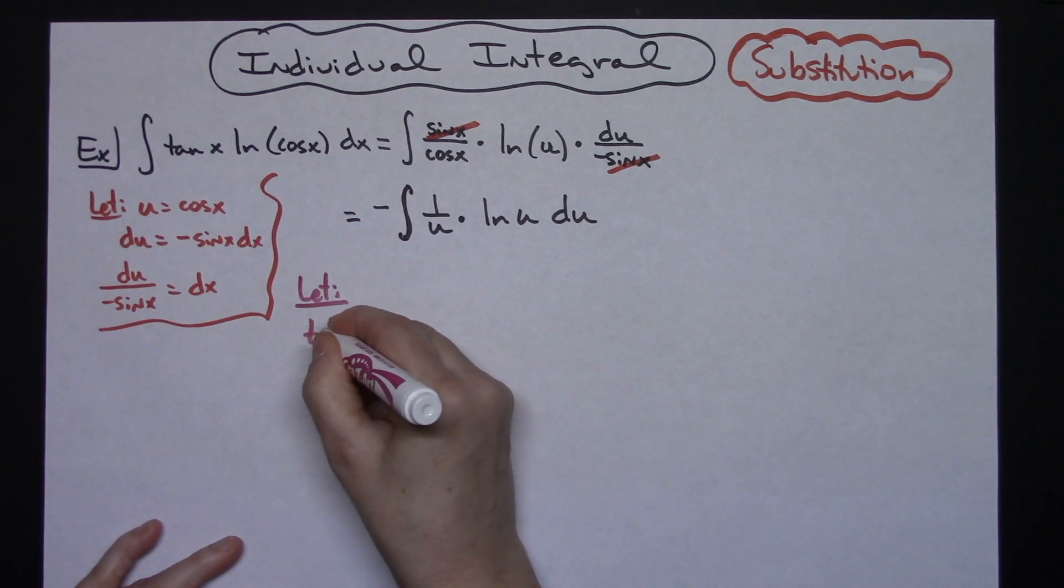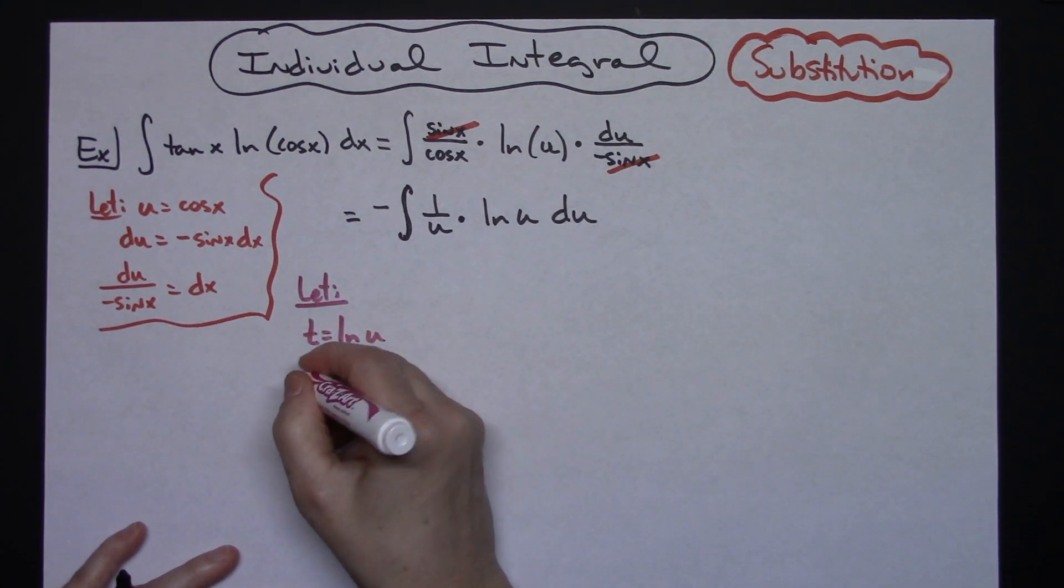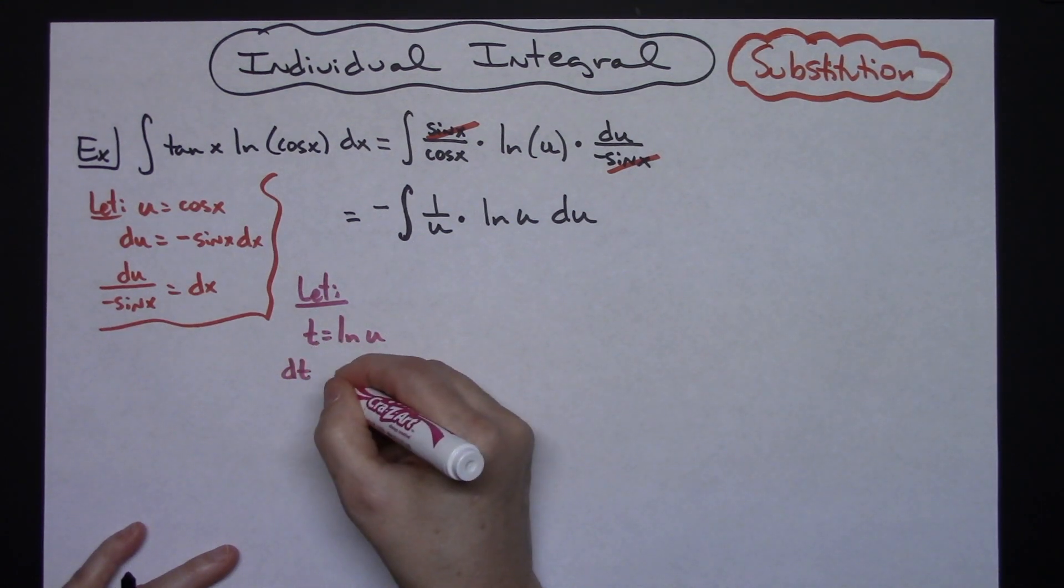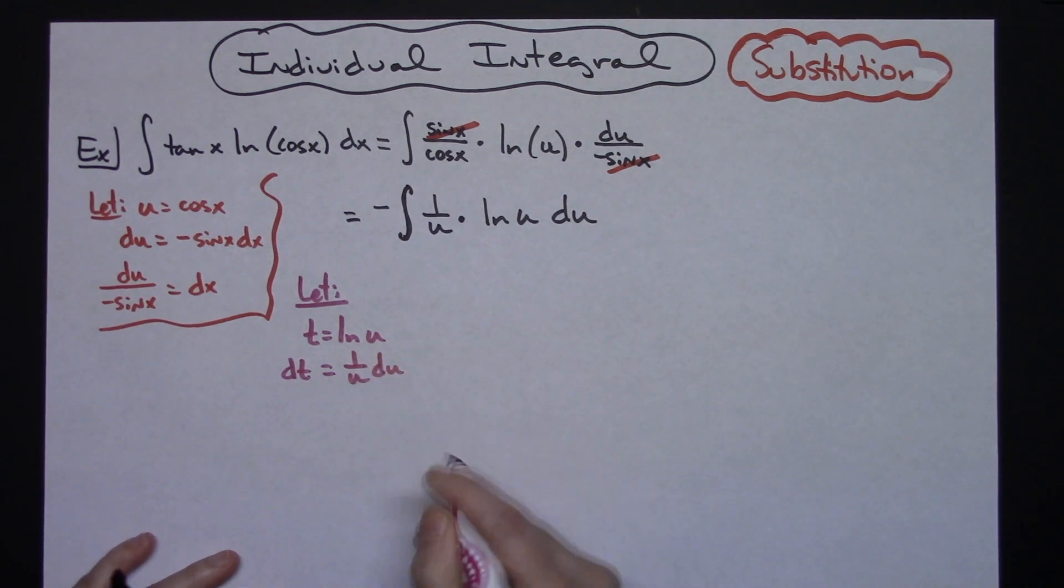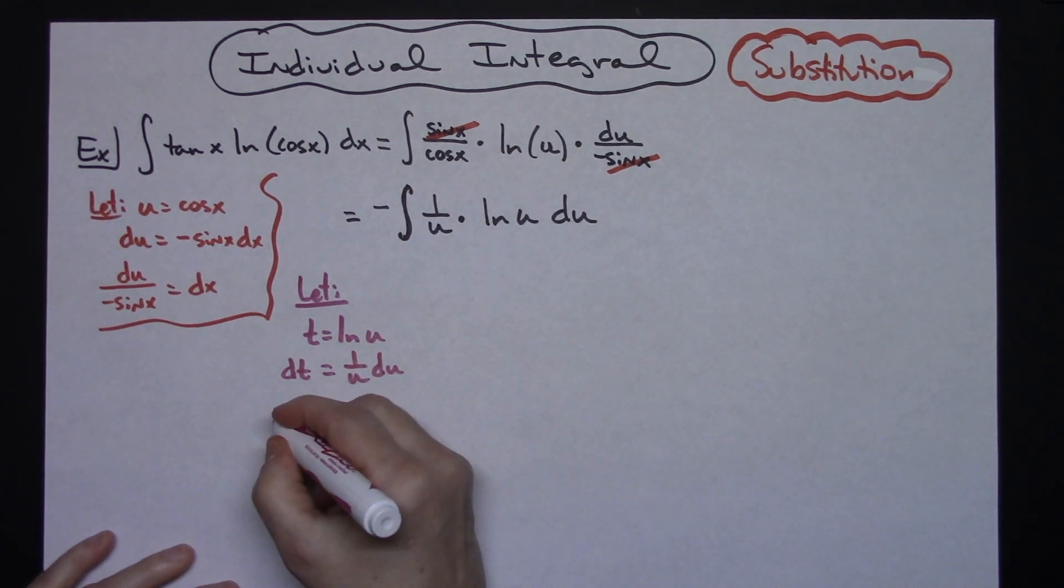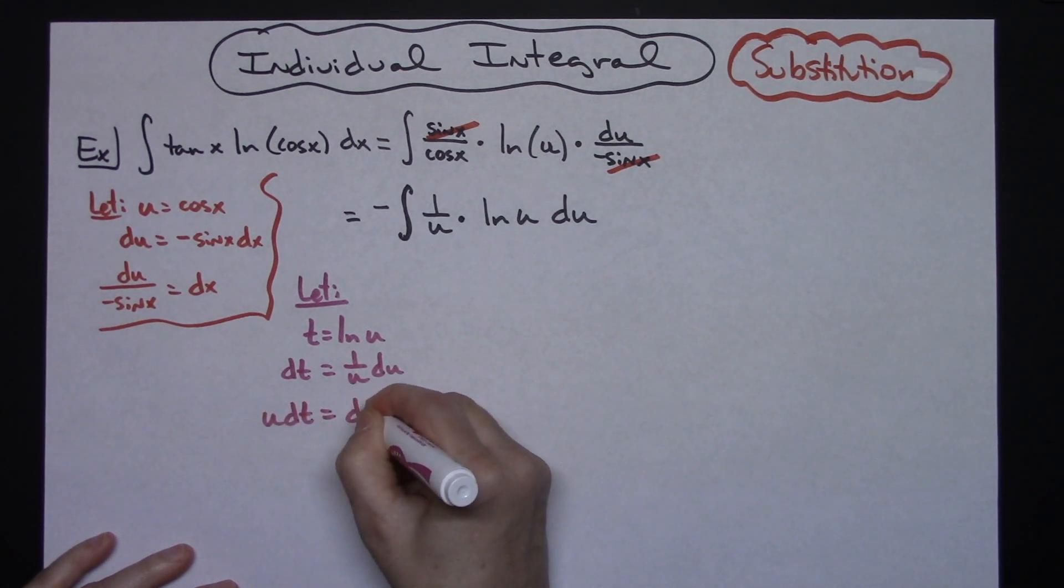Alright, I'm going to take the derivative of both sides. So I'll have a dt is equal to 1 over u du. And then if I multiply both sides by that 1 over u, it's going to result in u dt is equal to du.